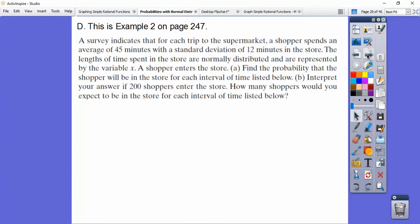So the first part is they want us to find the probability that the shopper will be in the store for each interval of time that they're going to ask. And then the second part is interpret that answer if 200 shoppers enter the store with that amount of time. So how many shoppers would you expect to be in the store for each interval of time listed after the 200?